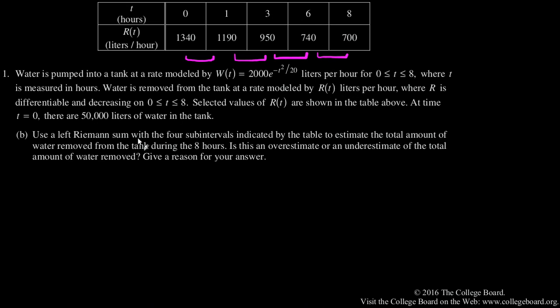Riemann sums make rectangular areas. So this first rectangle, the width is one, so we go from zero to one, and the height, since we're doing a left Riemann sum, is gotten from the left side of this interval, which the height there is 1,340.